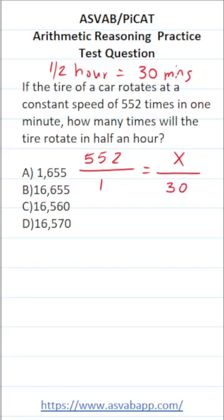How do you solve proportions? You solve them via cross multiplication. So 1 times X is just X equals, and this is 552 times 30.